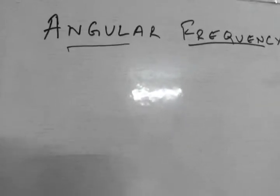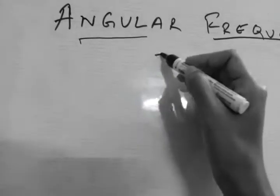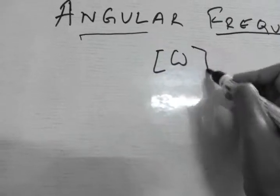Today we are going to talk about angular frequency, which is the most confused entity in physics when we read SHM.